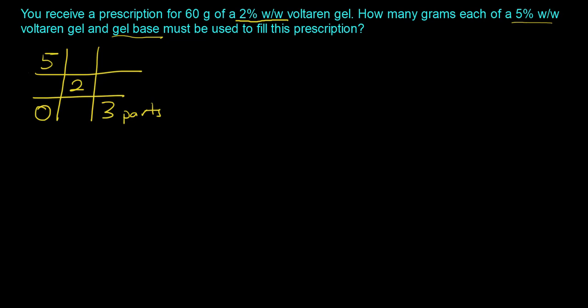And we do a similar thing for the parts of the higher strength, which will be the 5%. And so we subtract the 0 from 2, and that gives us 2, and that goes to the top right. So you have 2 parts of the 5%, and you have 3 parts of the gel base, which gives us a total of 5 parts.